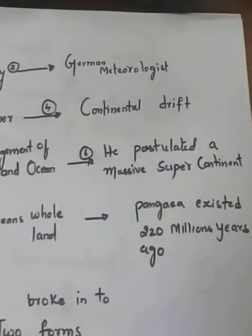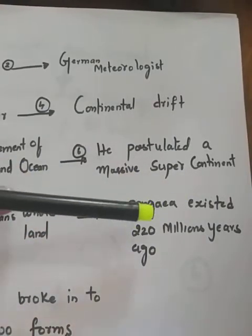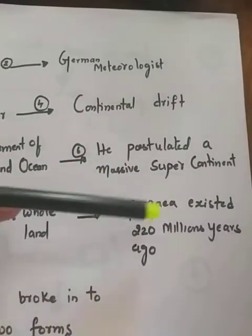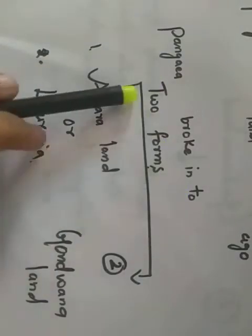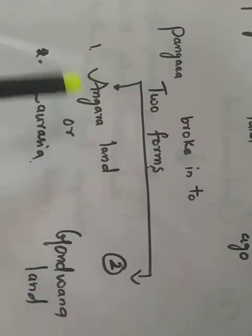Pangaea existed when? 220 million years ago. See children, Pangaea broke into two forms. What happened? At that time, Pangaea broke into two forms. That is Angara land or Laurasia - the same, Angara and Laurasia is the same name - and Gondwana land. Two forms: Angara land, Gondwana land.